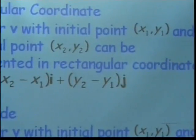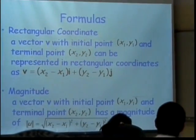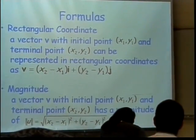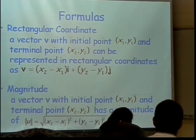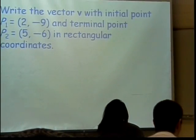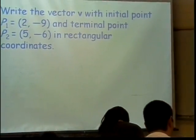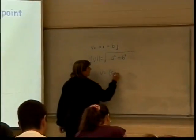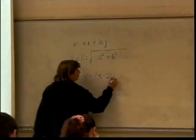Alright, how do I get my a that goes in front of i? I subtract 5 minus 2. I subtract my x. My end x minus my beginning x. 5 minus 2. And then I put in my i.